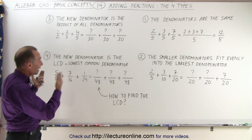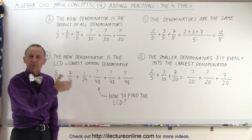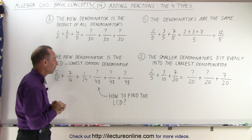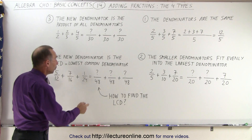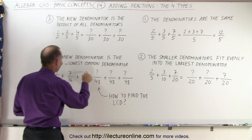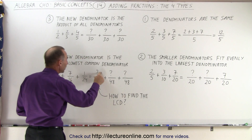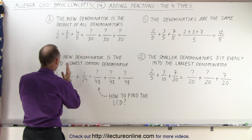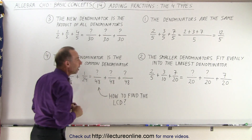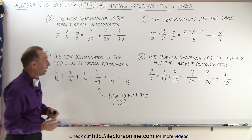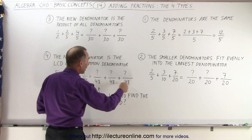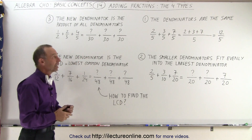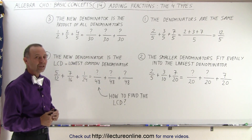After you see the method you'll understand how it works, and we'll show you how to find that number. Once you have a common denominator, you'll have to find new values for the numerator such that these three fractions are exactly equal in value to the three fractions you began with. And then, once they have a common denominator, you can simply add all the numerators together, just like we did in the first case.